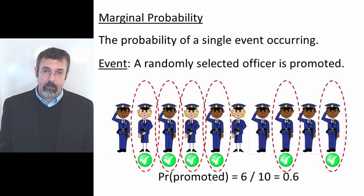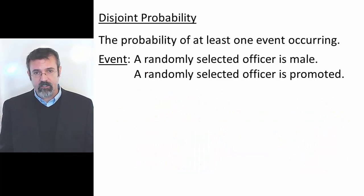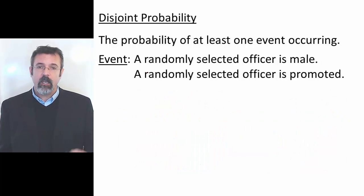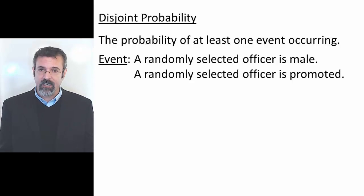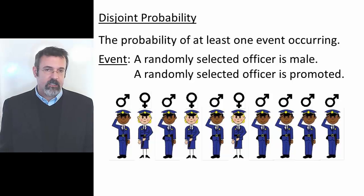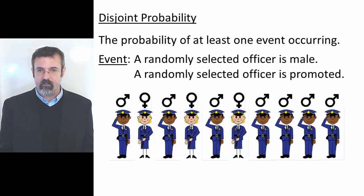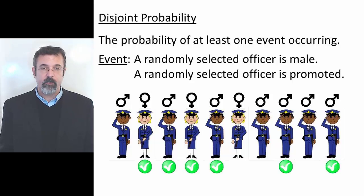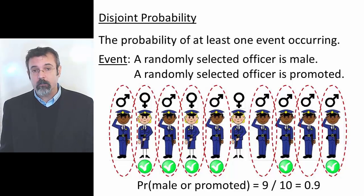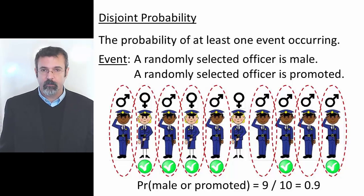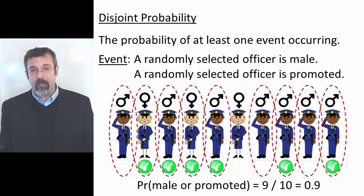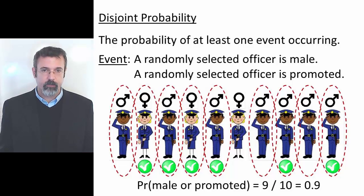We now have two events we can talk about: the probability of randomly selecting a male and the probability of randomly selecting an officer who has been promoted. A disjoint probability is the probability of at least one of these events occurring. 7 of the officers are male, 6 have been promoted, and of the 10 officers, 9 of them are either male or have been promoted. The probability of being male or promoted is a disjoint probability.